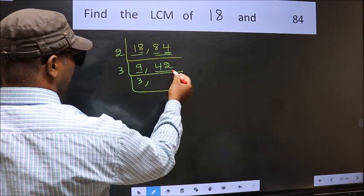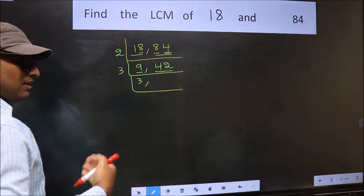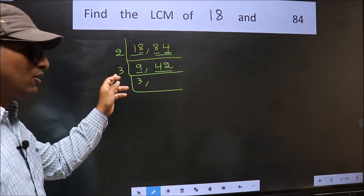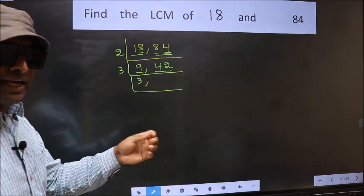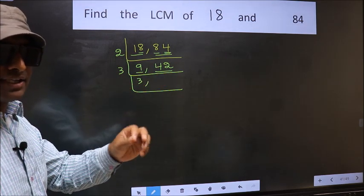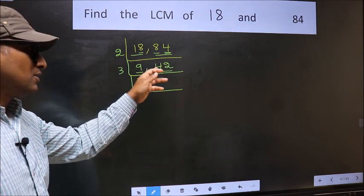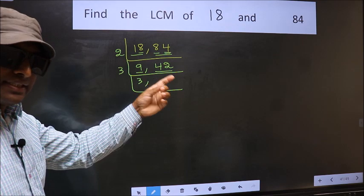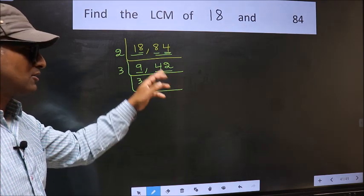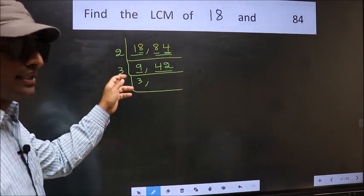The other number 42. To check whether 42 is divisible by 3 or not, for that we should add the digits. What I mean is 4 plus 2 equals 6. Is 6 divisible by 3? Yes. So this number is also divisible by 3.